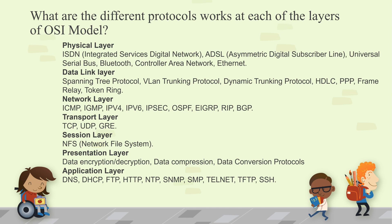Network layer protocols include ICMP, IGMP, IPv4, IPv6, IPsec, OSPF, EIGRP, RIP, and BGP. OSPF, EIGRP, RIP, and BGP are routing protocols that come under the Network layer. IPsec is the protocol used for encrypting data passing over any links.